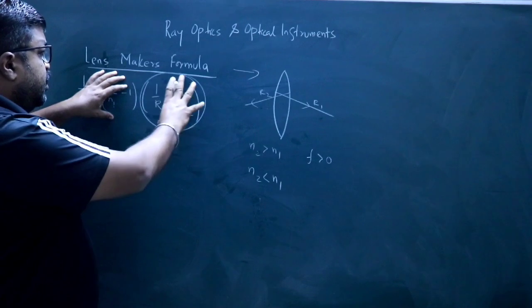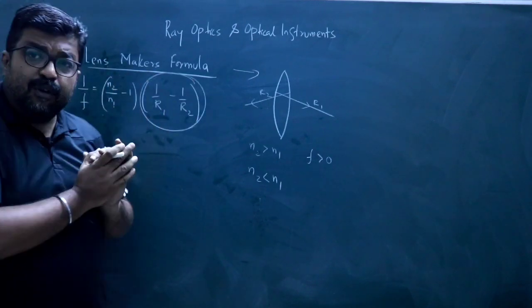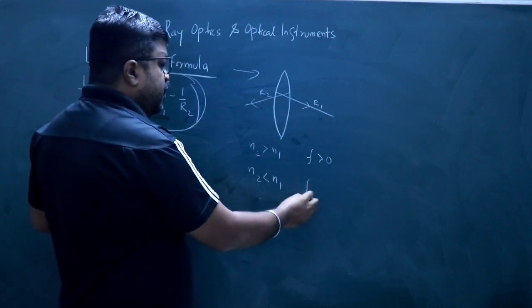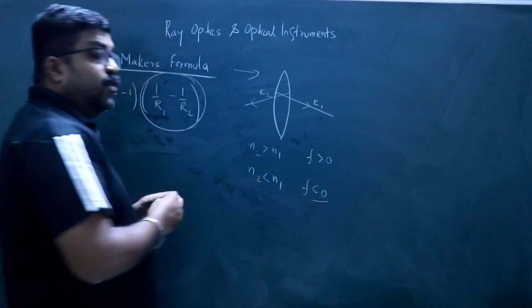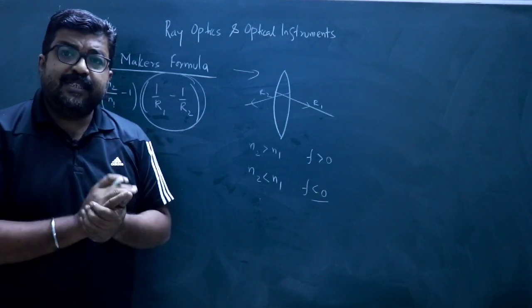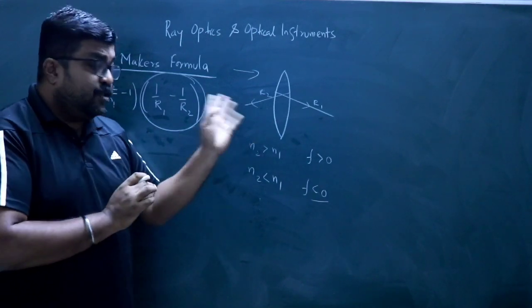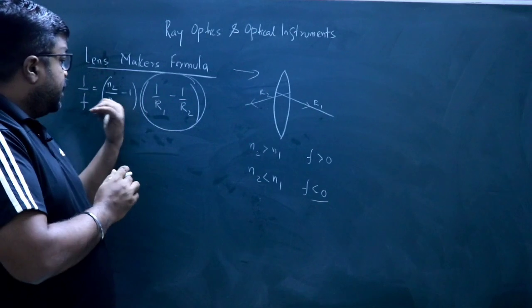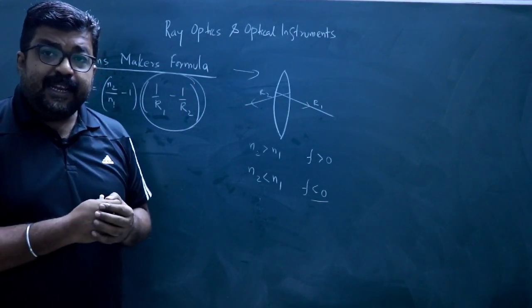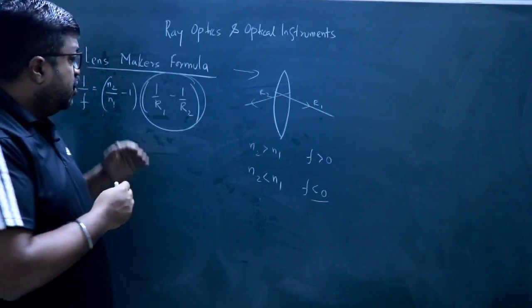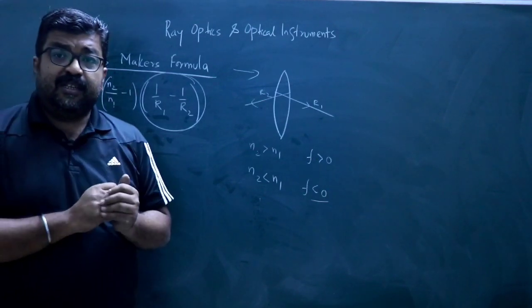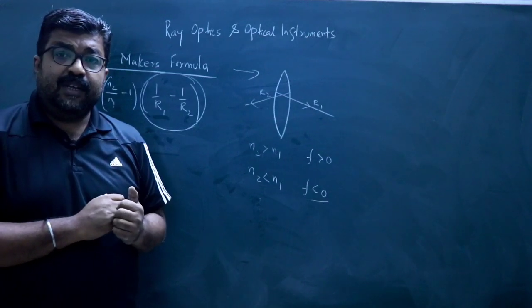If this refractive index quantity is negative and the curvature quantity is positive, then multiplying both gives a negative result. That means the focal length will be negative. If the focal length is negative, the lens will behave like a diverging lens — meaning the lens was converging but it is now behaving like a diverging lens. This is how the refractive index of the medium affects the focal length of the lens.